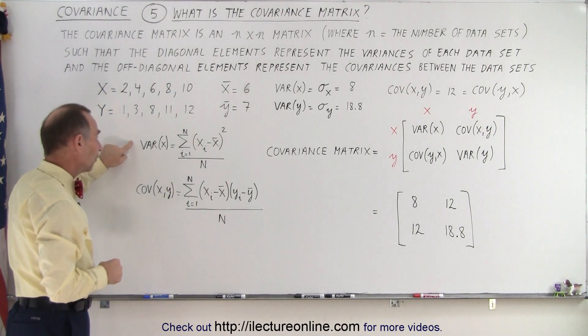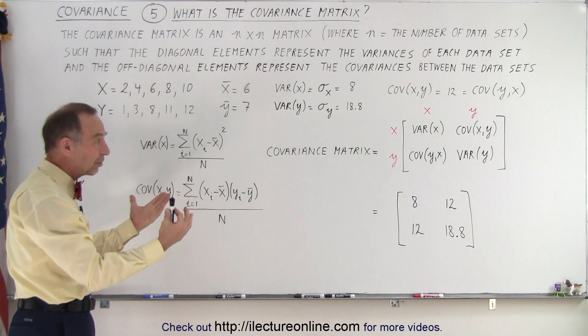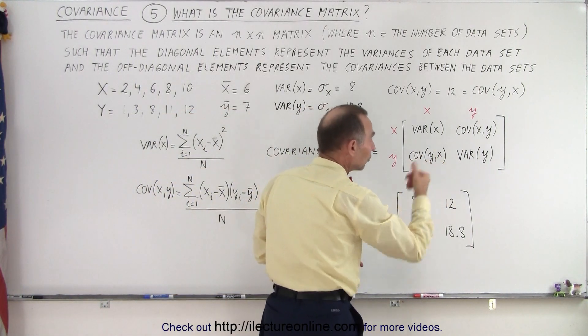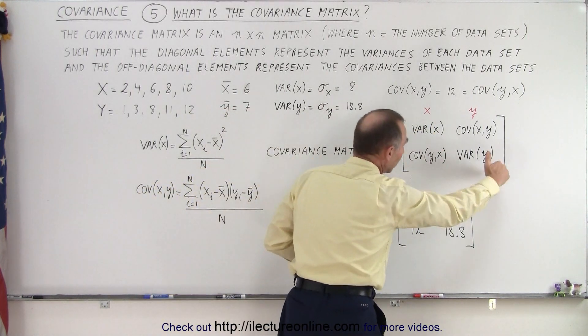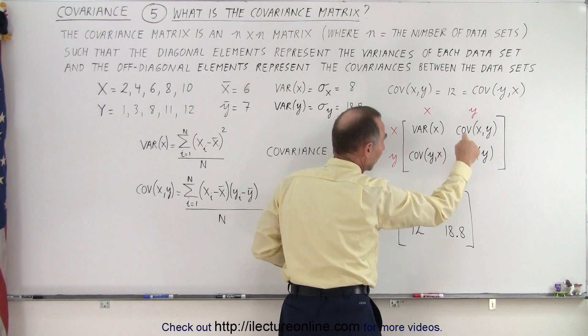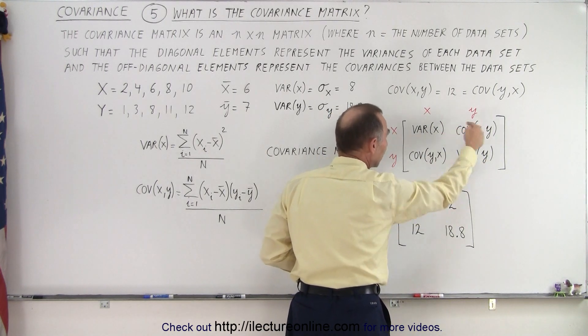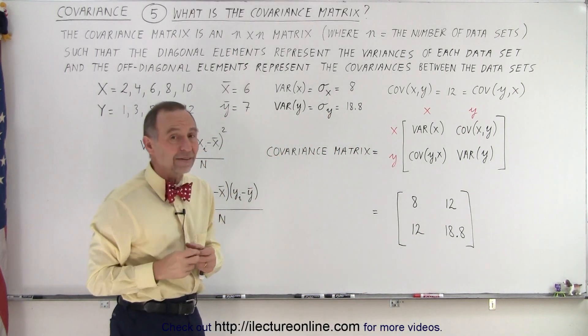Here are the definitions of the variance and covariance. The covariance matrix is simply where the elements represent either the variances or the covariances. The elements along the diagonal represent the variances - here's the variance of x and the variance of y. The off-diagonal elements are the covariances, where we calculate the covariance between data sets.